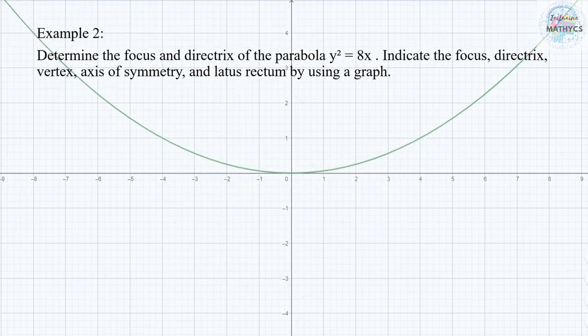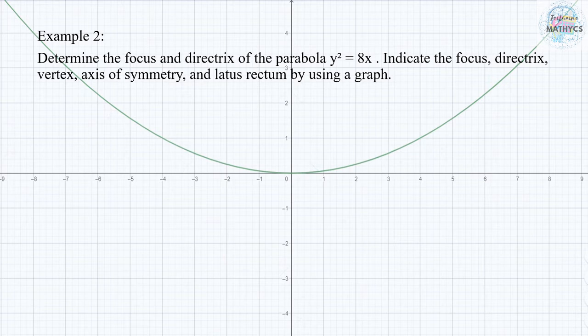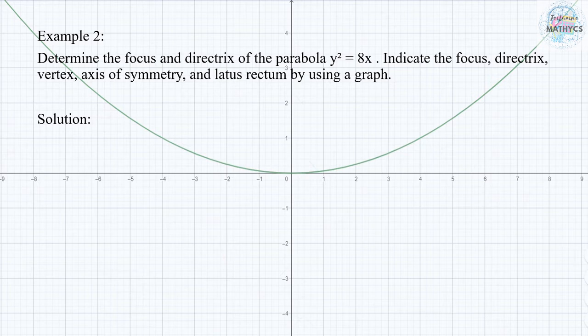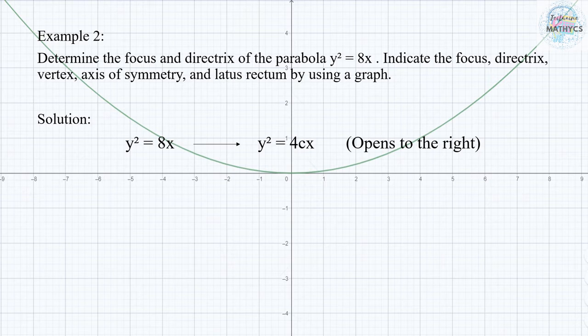Number 2: determine the focus and directrix of the parabola y squared equals 8x. Indicate the focus, directrix, vertex, axis of symmetry, and latus rectum using a graph. Since it follows the form y squared equals 4Cx, it opens to the right. Then we solve for the focal length by equating 4C to 8, giving us a result of 2.